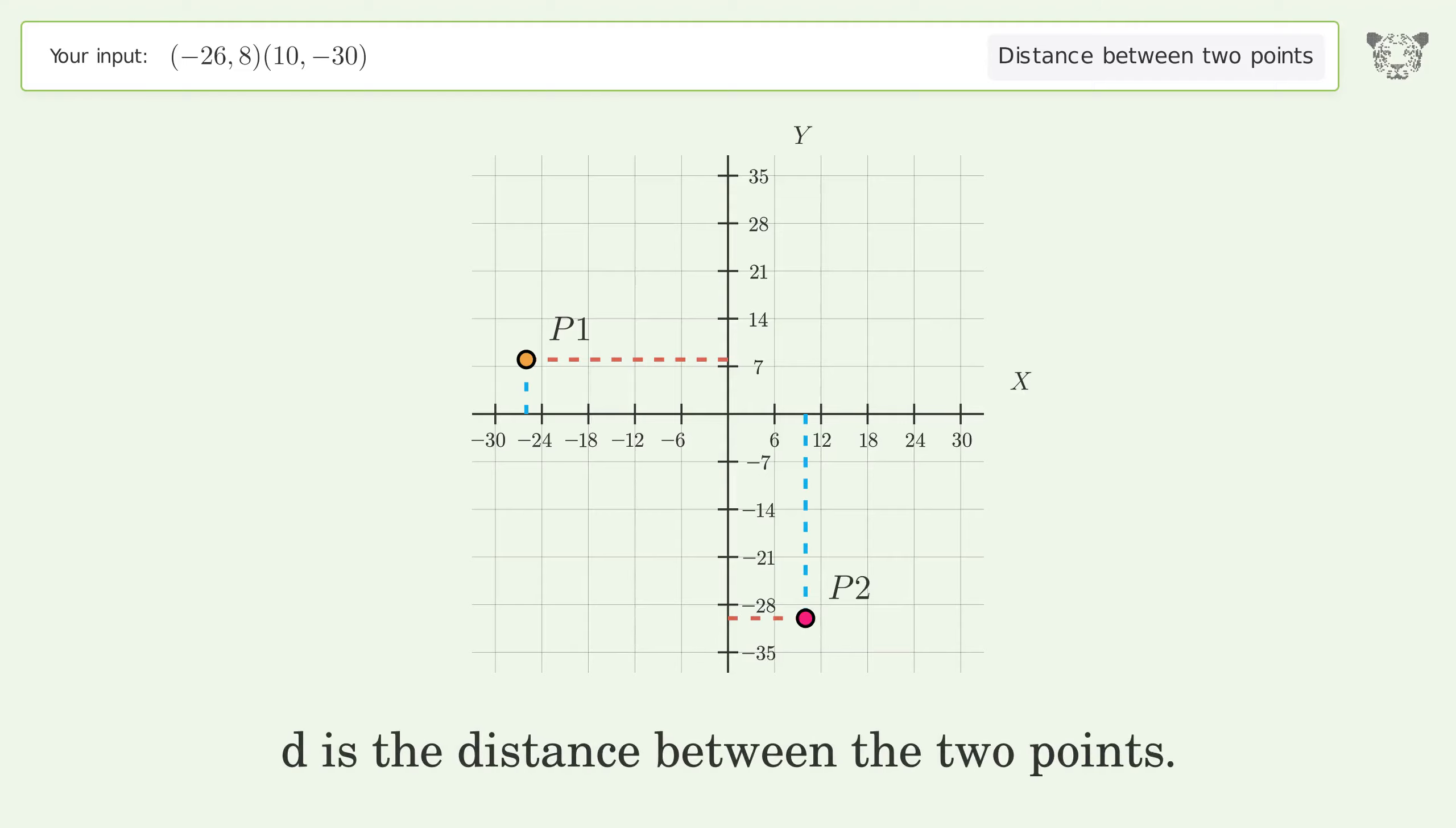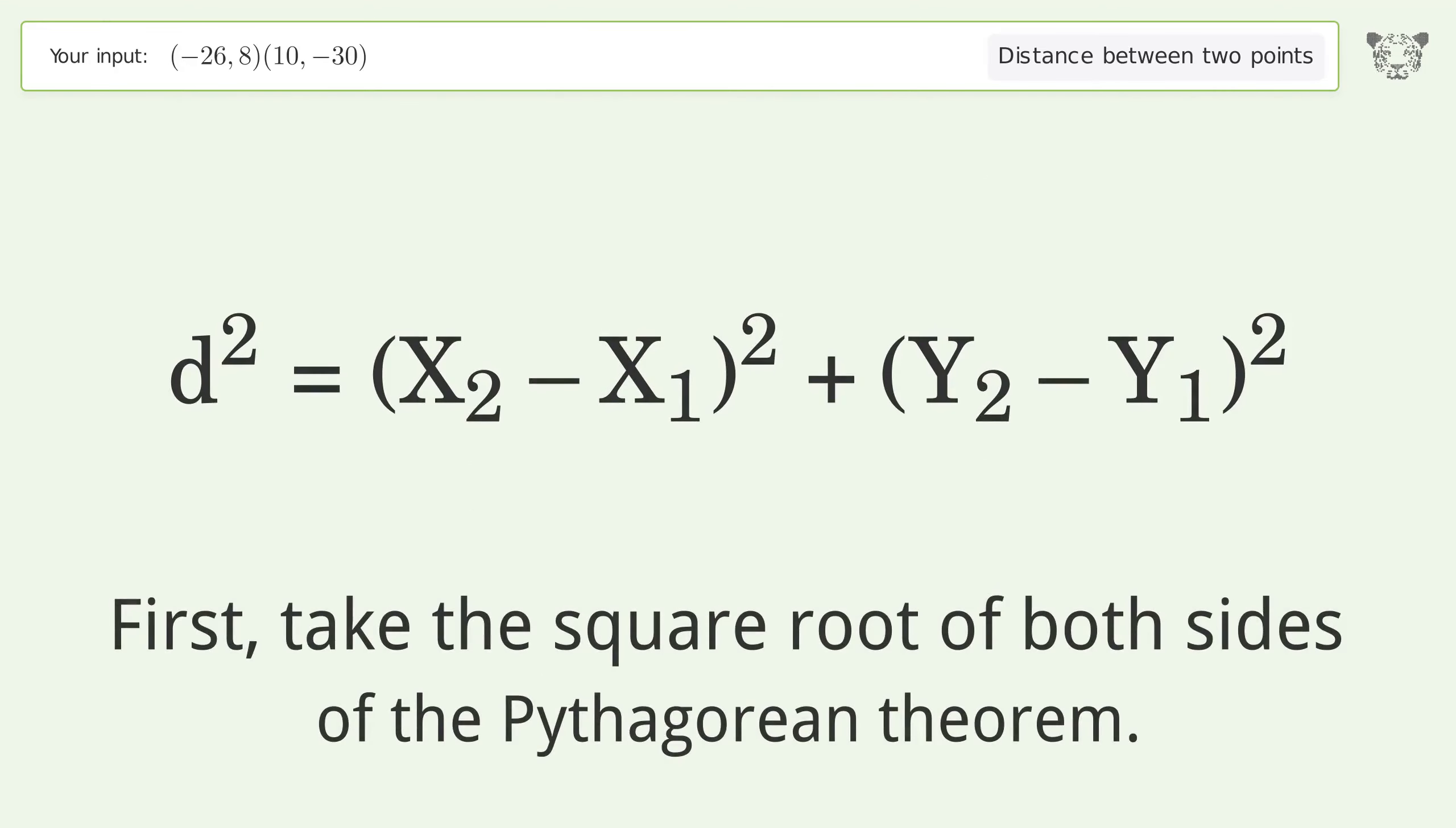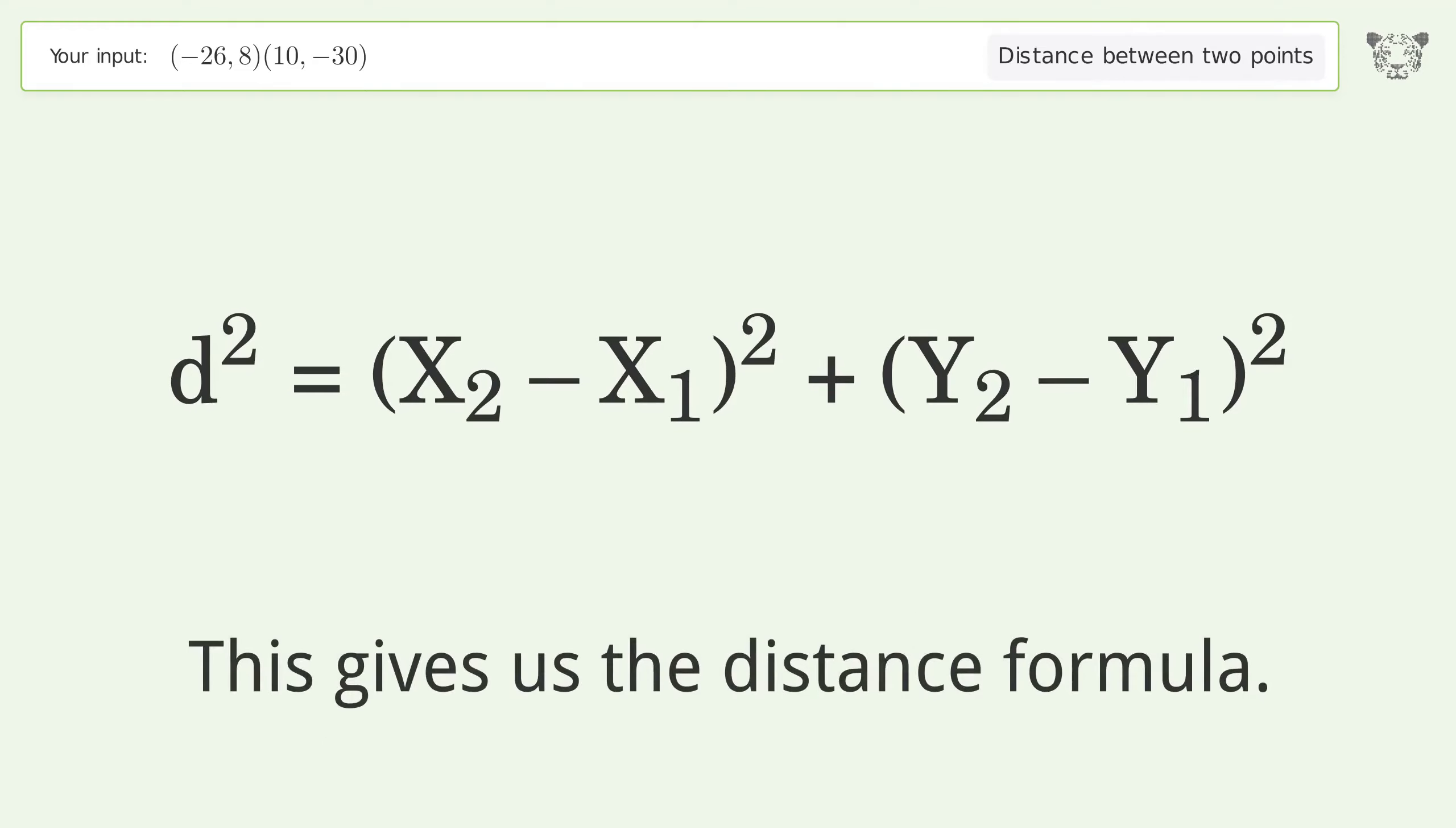d is the distance between the two points. First take the square root of both sides of the Pythagorean theorem. This gives us the distance formula.